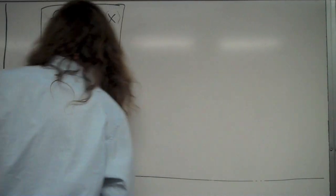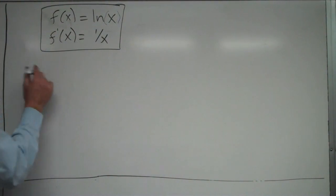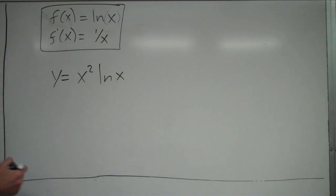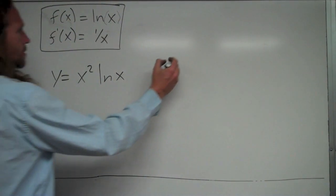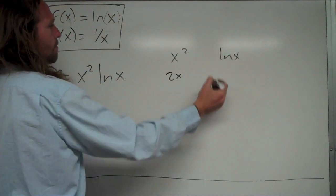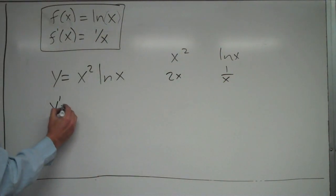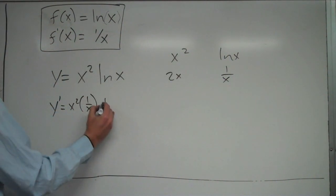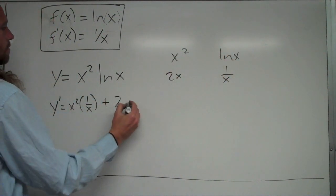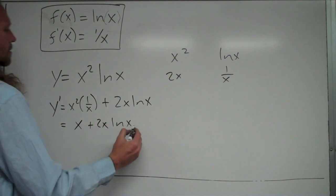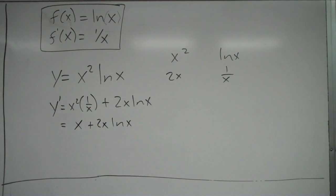Let's look at y equals x squared times natural log of x. Here we apply the product rule. The two functions are x squared and ln x. The derivative of x squared is 2x, and the derivative of ln x is 1 over x. Applying the product rule: x squared times 1 over x plus ln x times 2x, which simplifies to x plus 2x ln x. That's the derivative.